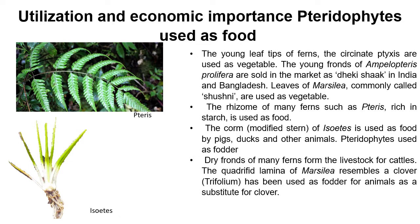Let us understand the economic importance of pteridophytes which are used as foods. The young leaf tips — fronds — are used as vegetables. The sarsina texas are used as vegetable. The young fronds of Ampelopteris prolifera are sold in market as Dekishak in India and Bangladesh. The leaves of Marsilia, commonly called Shushni, are used as vegetables.